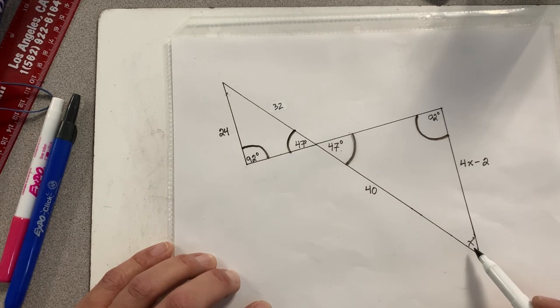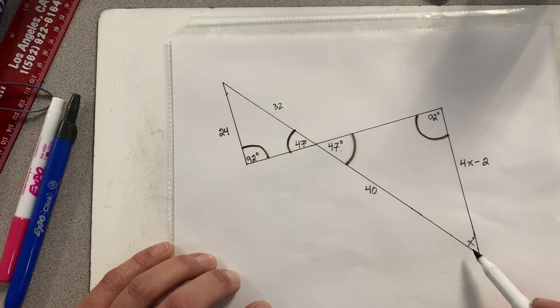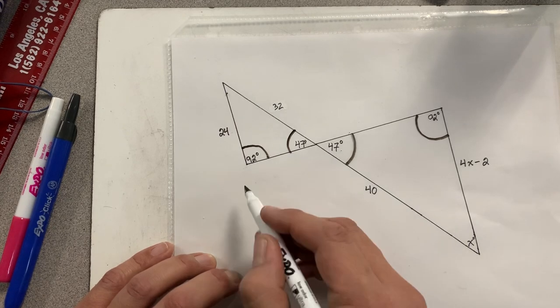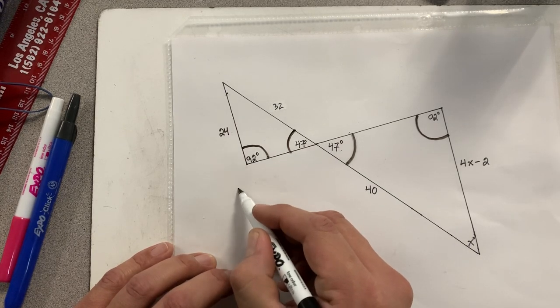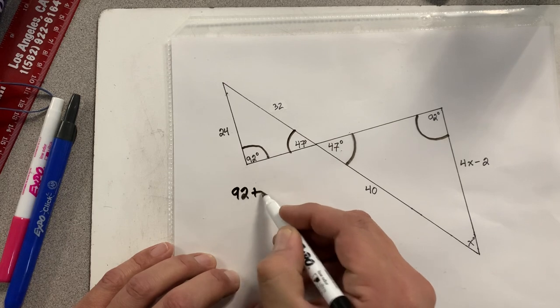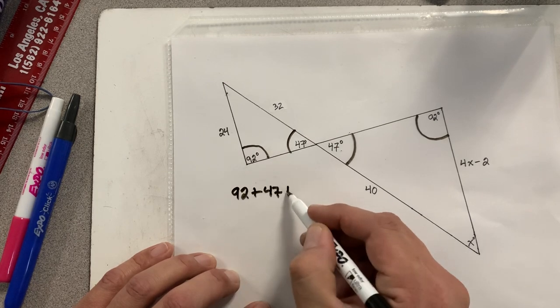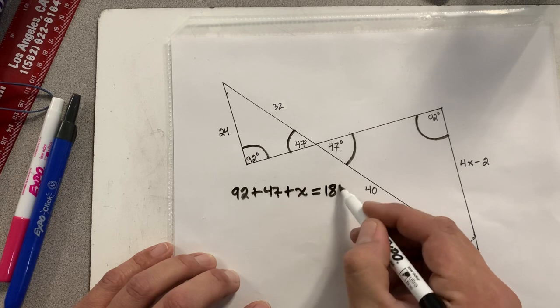Because when we add up all the angles in the triangle, what do we get? 180 degrees. So we're going to go 92 plus 47 plus X is going to get me 180 degrees.